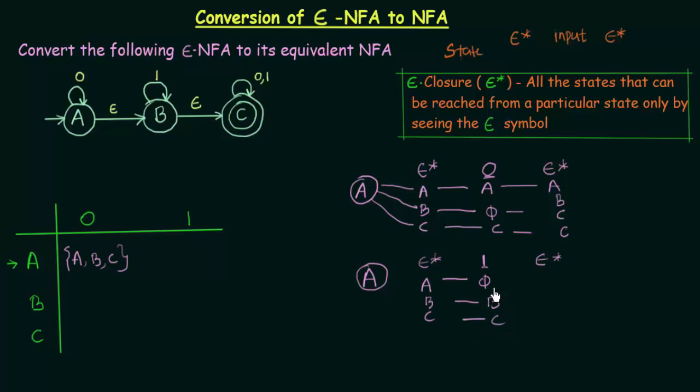We have to do the Epsilon Closure of B and C. Phi is nothing. Epsilon Closure of B: B goes to B itself on Epsilon and also to C, so Epsilon Closure of B is B and C. Epsilon Closure of C is only C. The final states we obtain are B, C, C — meaning states B and C. So A on getting input 1 goes to B and C in our NFA.